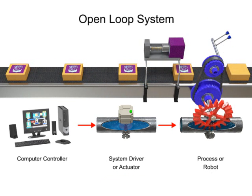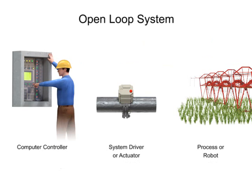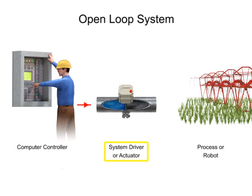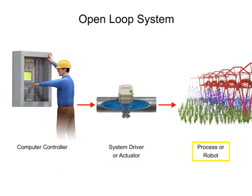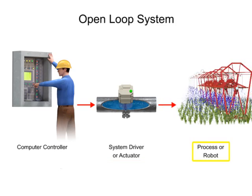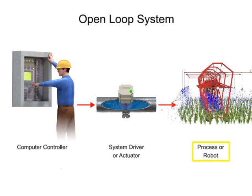A simple example of an open-loop system is an industrial sprinkler system. In this example, the programmer updates the computer controller, which will turn the sprinkler on at a designated time. When the computer sends the signal, the water valve will turn on. When the valve turns on, water flows to the sprinkler and drives a motor that allows the sprinkler to simultaneously move along the field and water the crop.